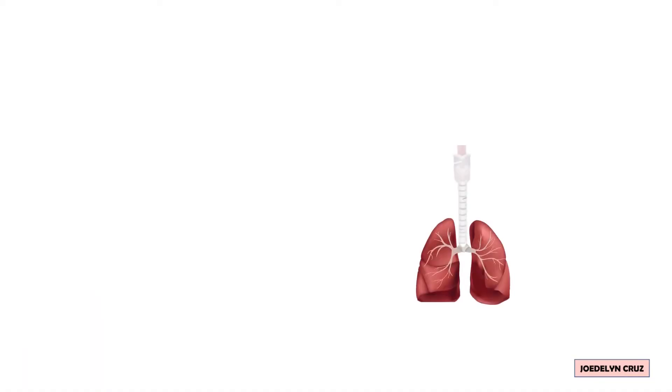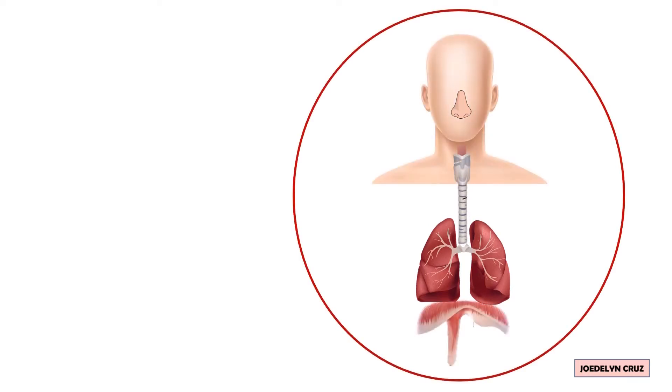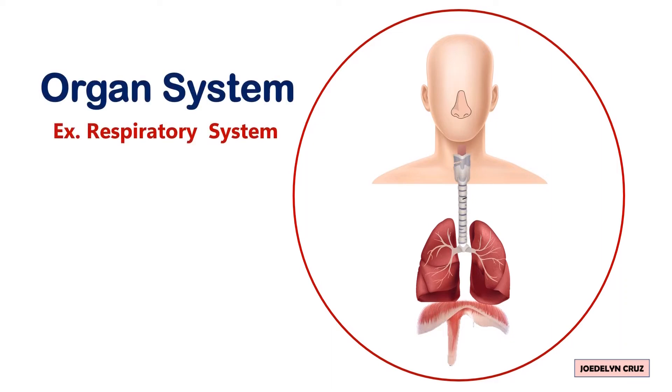Organs such as lungs, trachea, nose, diaphragm, and other organs that work together to perform a specific function, which in this case is breathing, make up an organ system.